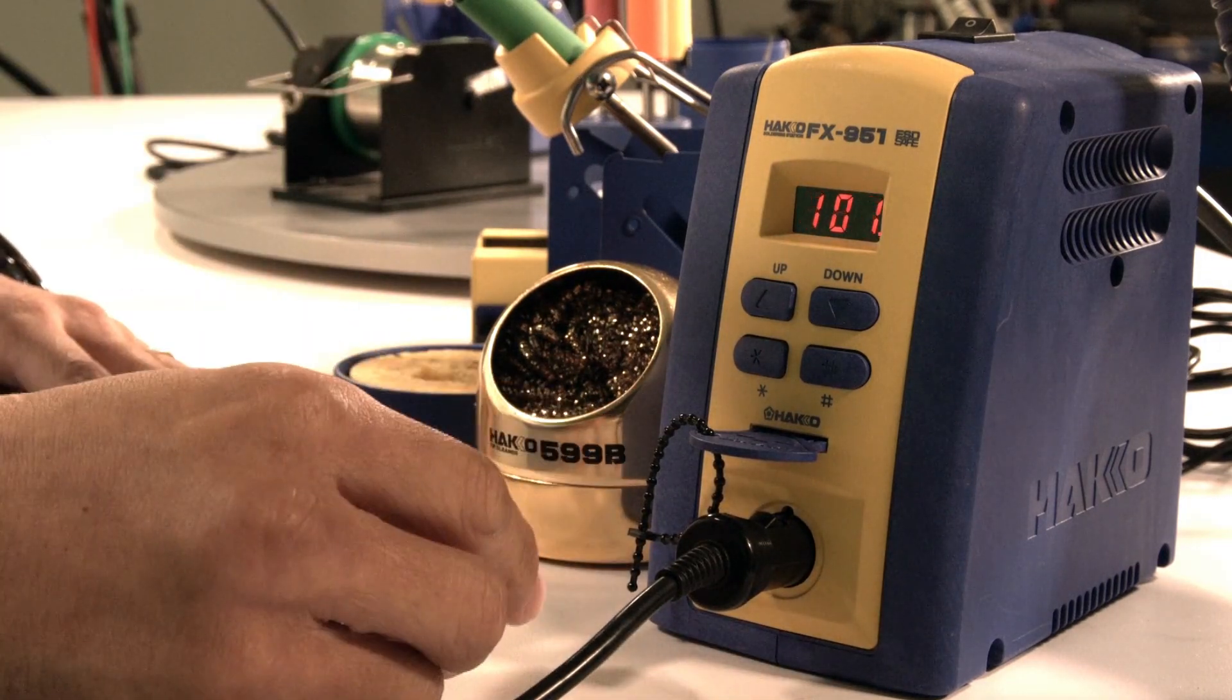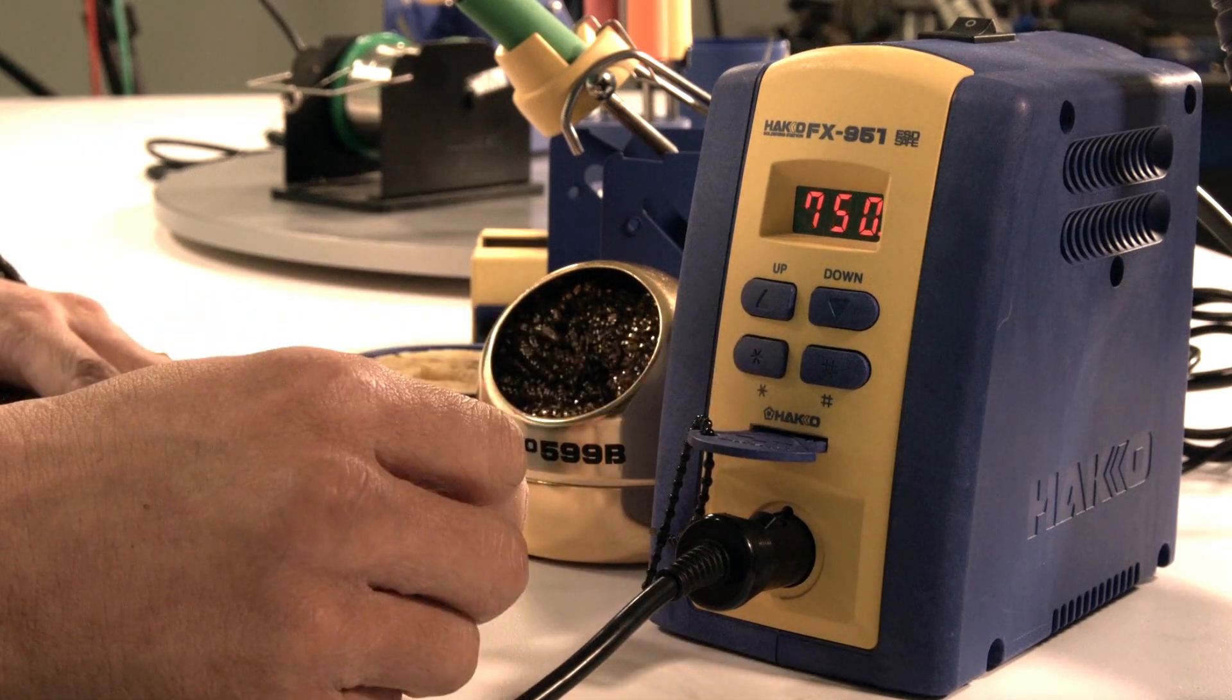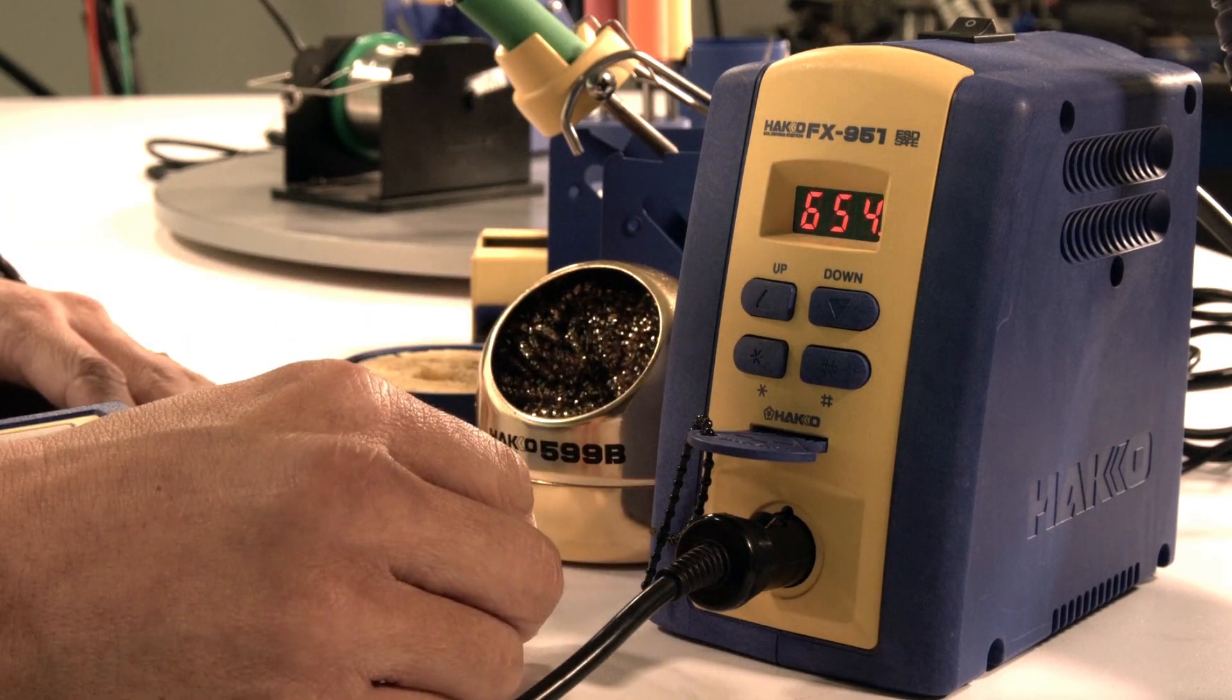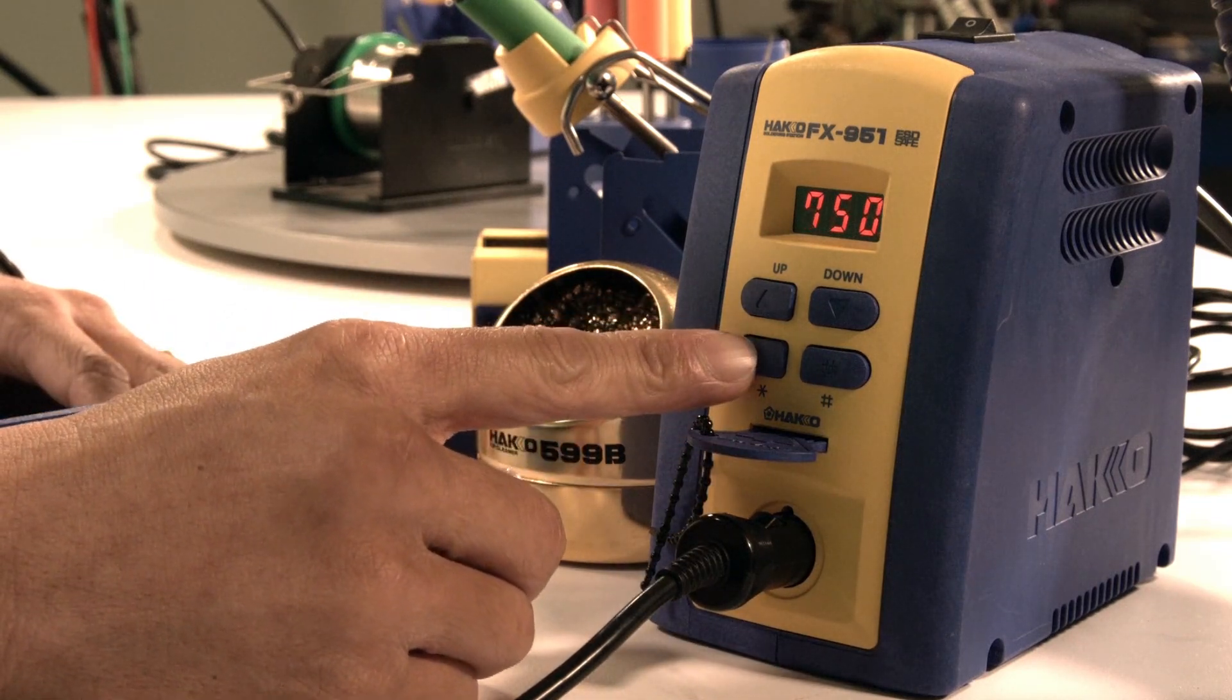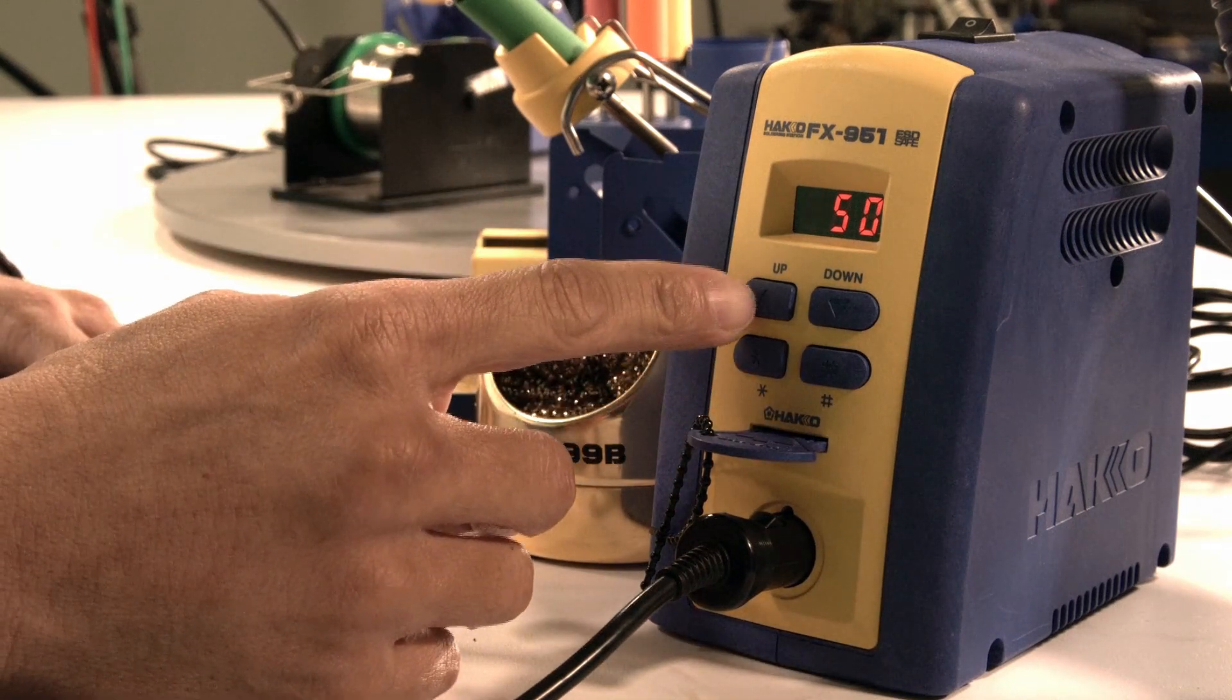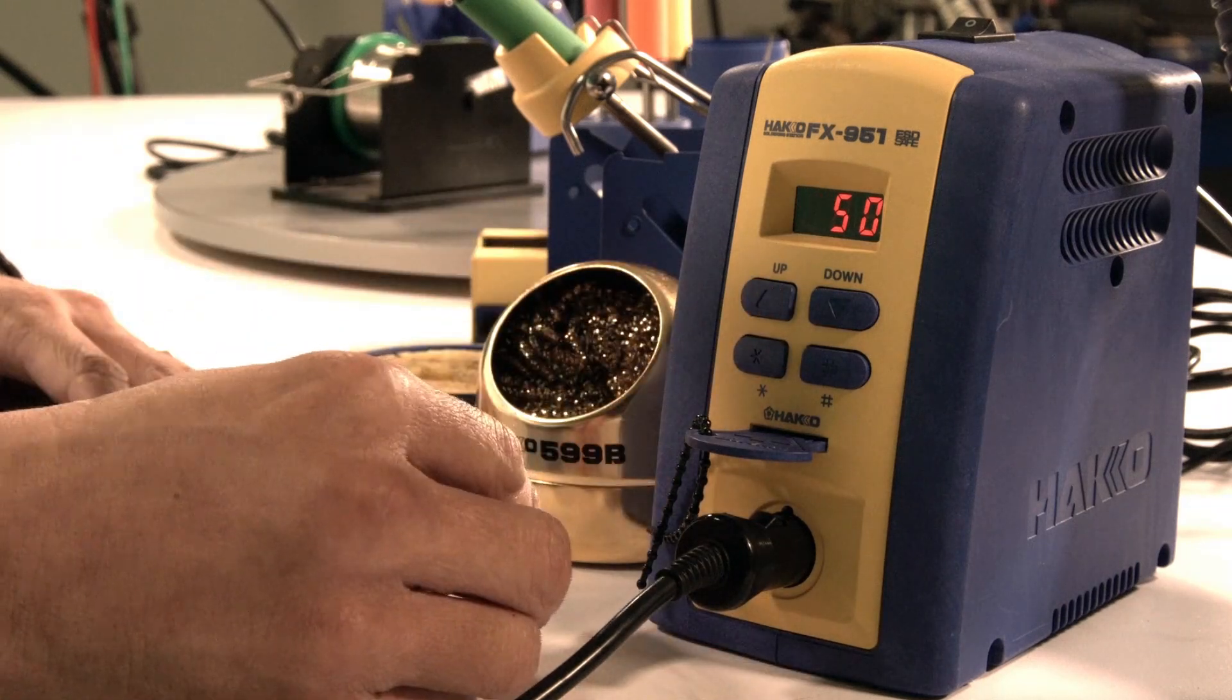Insert that into the slot and turn on the station. I'll go over the basic setup really quick. If you press the star button once, it'll give you a quick glance of your set temperature: 750. Press it again, 750, really easy.